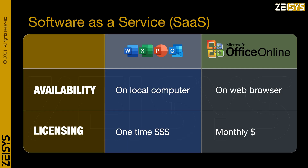Software as a Service is another model where a provider gives you access to software for a monthly fee. The best example is Microsoft Word. You can buy a one-time license for around $100, or you can get an Office Online subscription for $3 per month. SaaS has become so popular nowadays that the majority of software in the market is sold as SaaS.